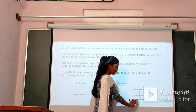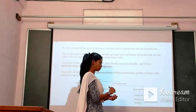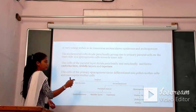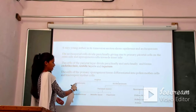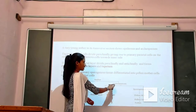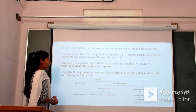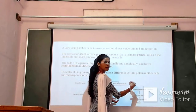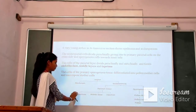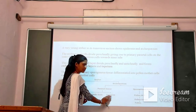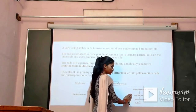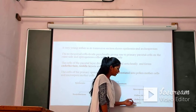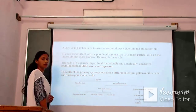The primary sporogenous tissue will form pollen tetrads — tetrad means pollen arranged in groups of four. That pollen tetrad is then released and gives rise to pollen grains. To repeat: the anther in transverse section shows epidermis and archesporium; archesporium divides periclinally into parietal tissue (outer) and sporogenous tissue (inner). The parietal tissue forms endothecium, middle layer, and tapetum. The primary sporogenous tissue gives rise to pollen mother cells, which produce pollen tetrads, which get converted into pollen grains — our male gametes.